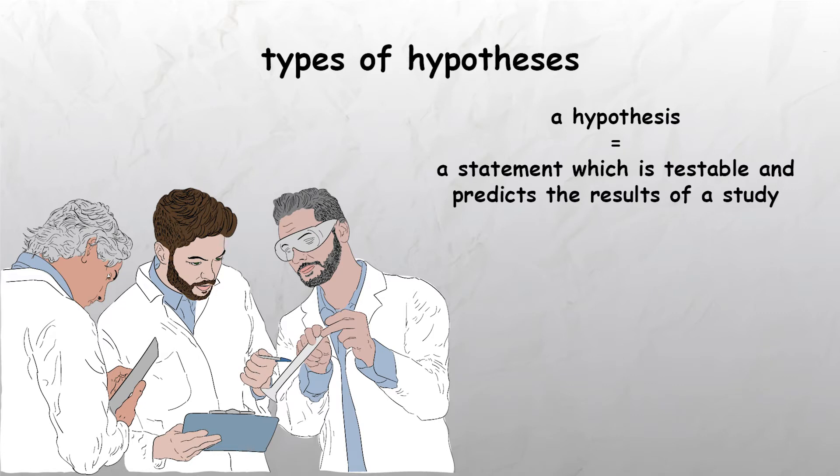It usually postulates a relationship between the independent variable, which is the variable that the researchers change, and the dependent variable, which is the variable that the researchers are measuring.